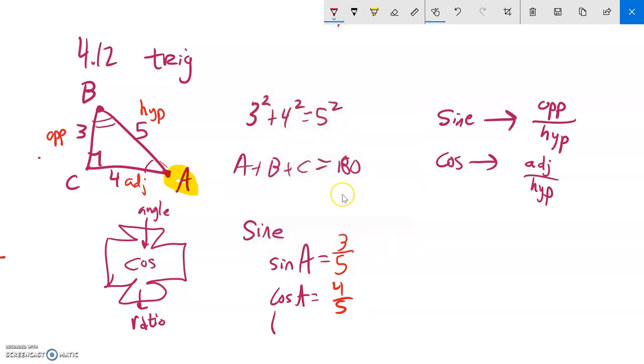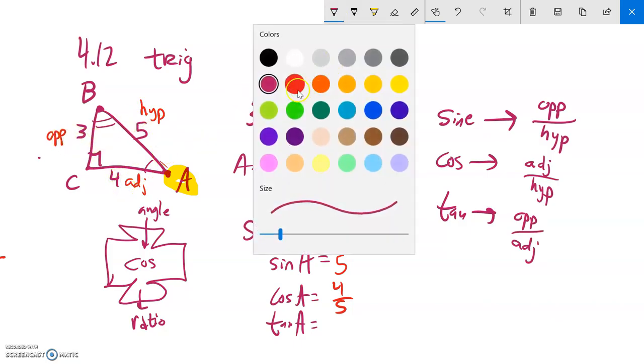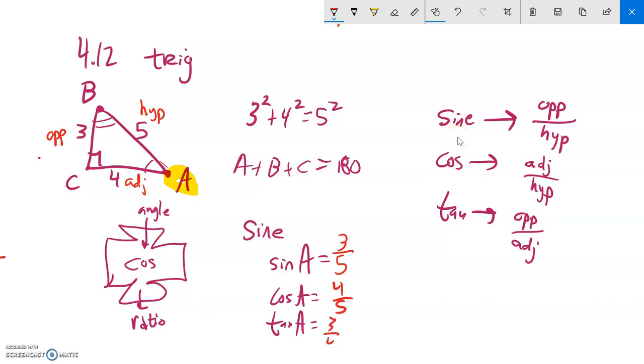And the last trig function I want to talk about, tangent, same idea, tangent of A, tangent of some angle. What tangent spits out is opposite over adjacent. So in this case, opposite is 3, adjacent is 4. So opposite over adjacent is 3 fourths.